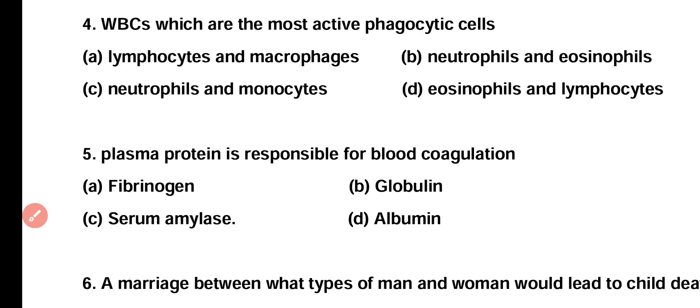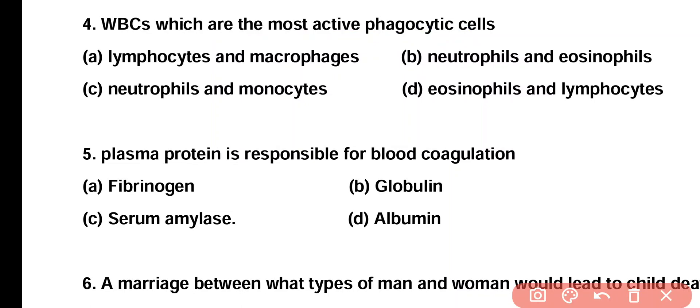Question number 4. White blood cells which are most active phagocytic cells: lymphocytes and macrophages, neutrophils and eosinophils, neutrophils and monocytes, or eosinophils and lymphocytes? Correct answer is option C. White blood cells which have active phagocytic activity are neutrophils as well as monocytes.